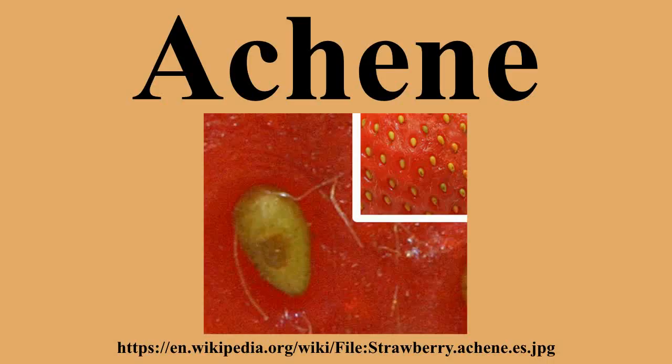Variations: A winged achene, such as in maple, is called a samara. Some achenes have accessory hair-like structures that cause them to tumble in the wind in a manner similar to a tumbleweed. This type is sometimes called the tumble fruit, a diaspore. An example is Anemone virginiana.